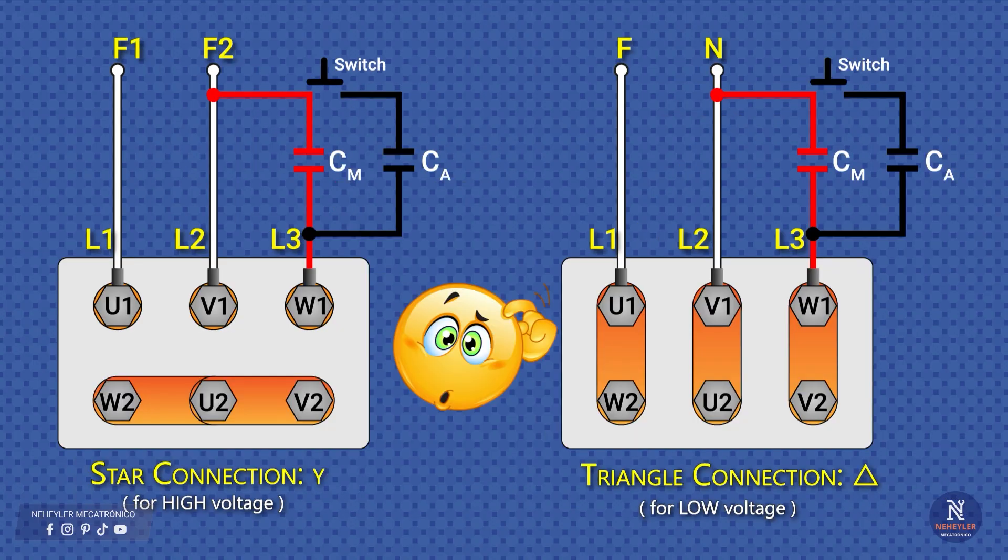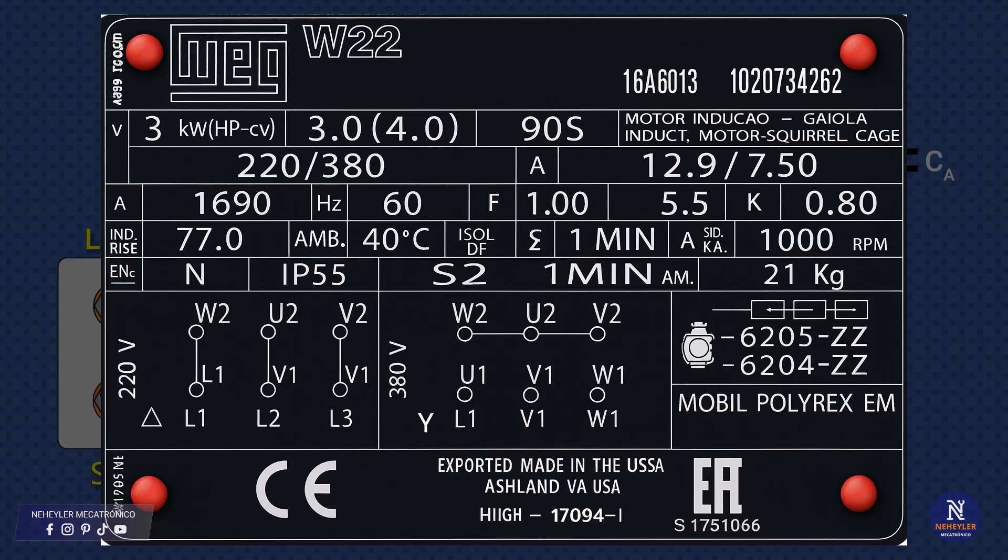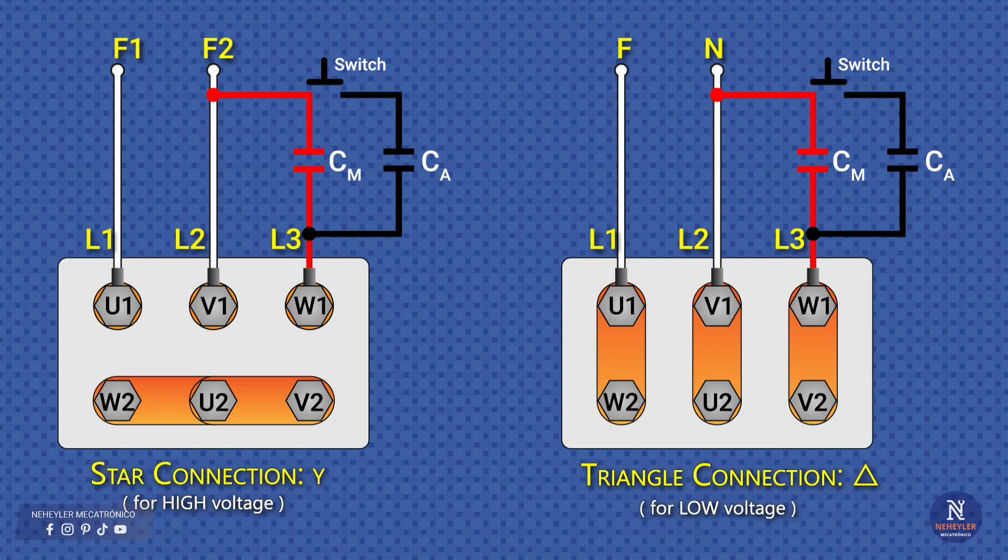Now then, how do we choose between star or delta? The answer is on the motor nameplate. For example, this motor indicates 220 volts for delta connection and 380 volts for star connection. Now let's see how the capacitors come in.